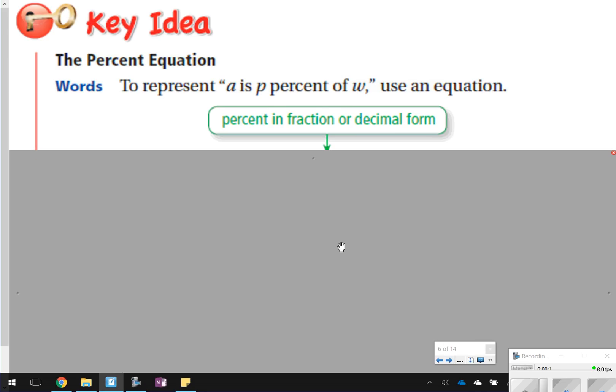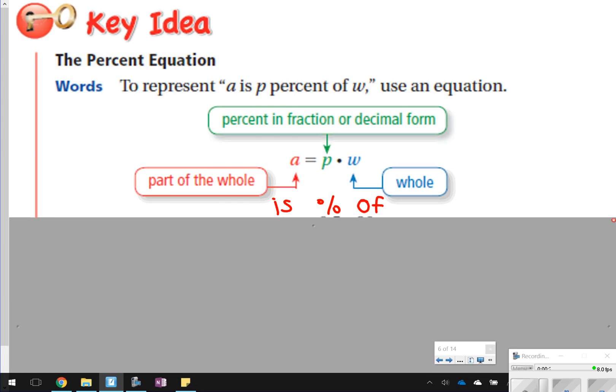The first thing we want to look at is what is the percent equation. It's basically the percent proportion, but written in the equation format. We're still talking about A is the part, P is the percent, and W is the whole. This is how you'd use it in an equation. We know that A would be part of the whole, so that would be your solution.